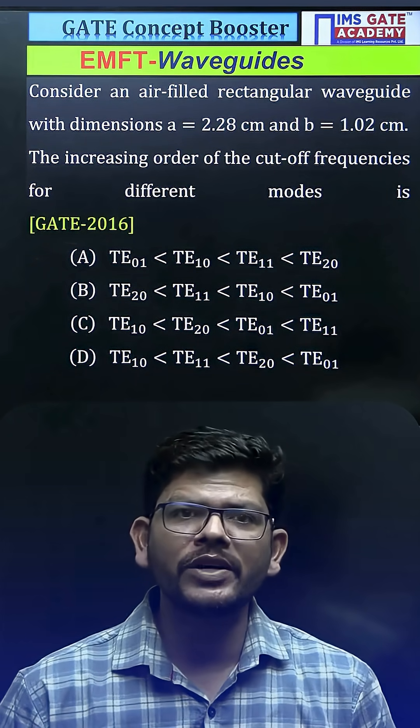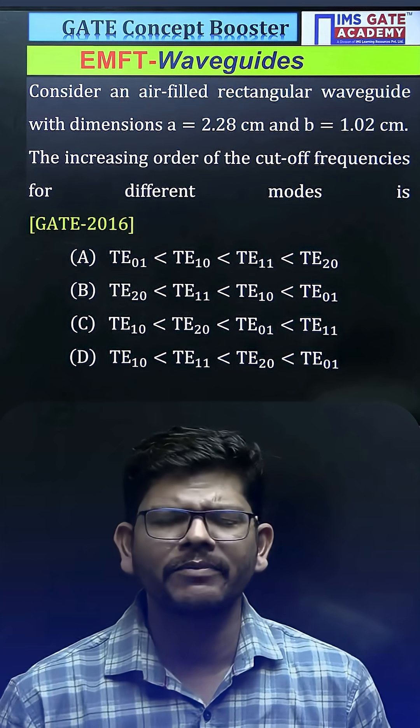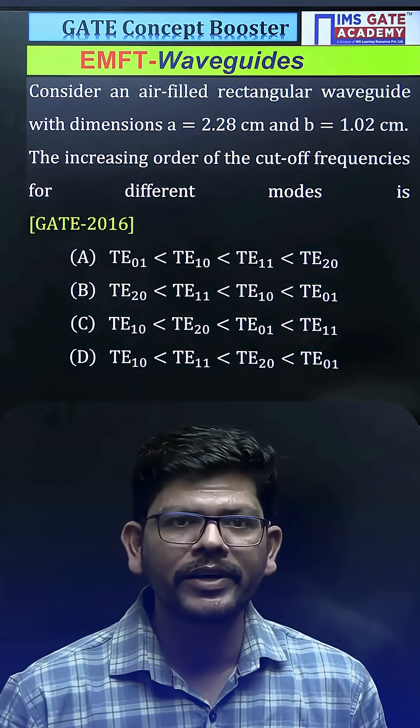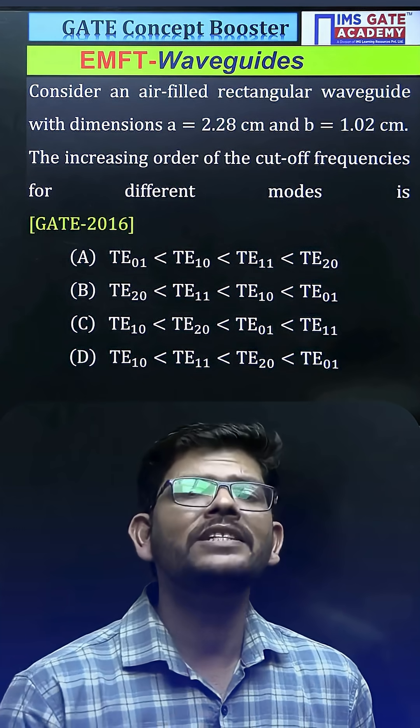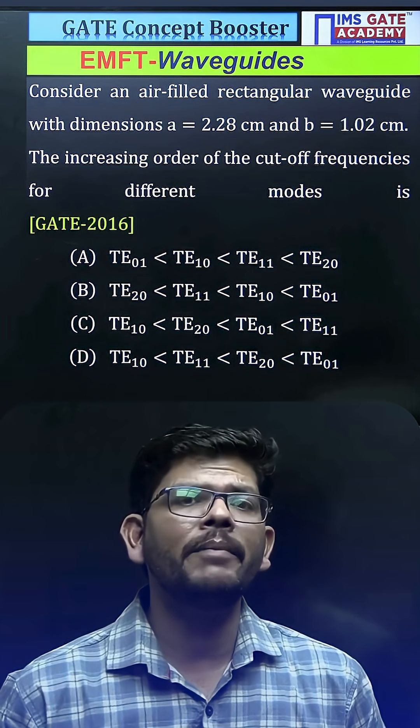Hello everyone, can you solve this GATE question of 2016 from the subject EMFT from the chapter waveguide? What has been asked in this question is that we have been given a rectangular waveguide which is filled with air, and its dimensions A and B are given where A is greater than B.